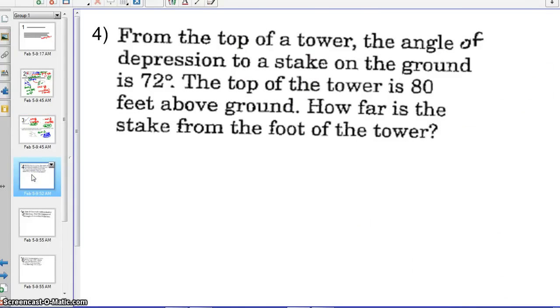For these next types of problems, we're going to talk about the angles of depression and elevation. We need to make sure that we draw an accurate diagram. We'll read the problem first. From the top of the tower, the angle of depression to a stake in the ground. So we have a tower. This is the angle from the top of the tower down to a stake in the ground. That angle looking down from the tower, the angle of depression is 72 degrees.